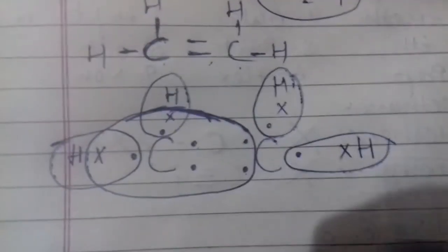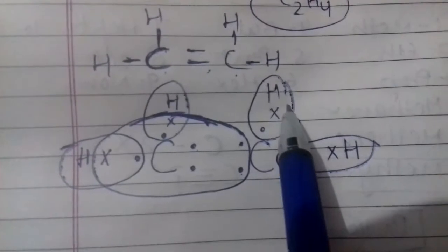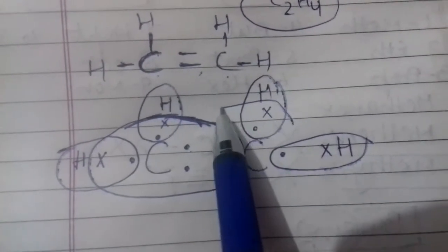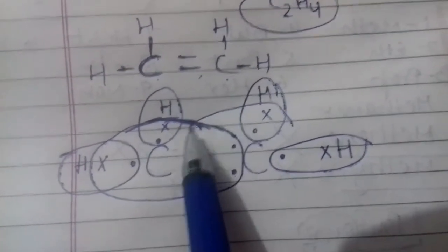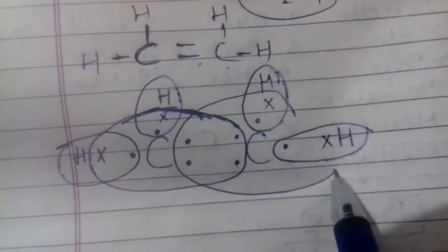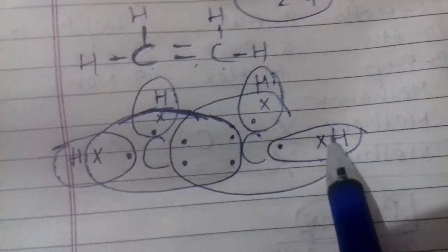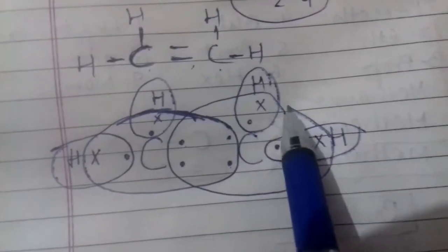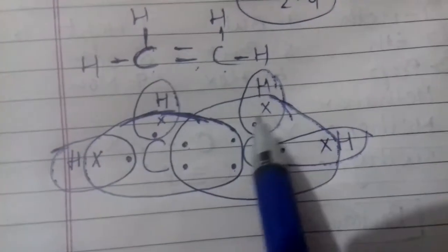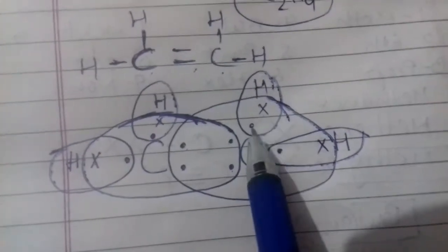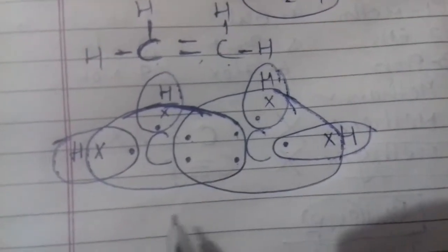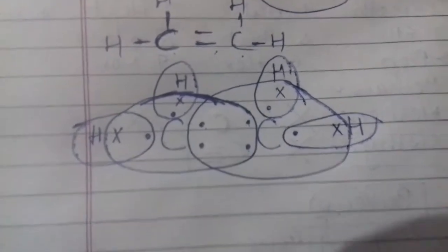8 electron हो गए और इसका octet complete हो गया। इसी तरीके से ये वाला carbon है - इसकी valency भी complete हो जाएगी। ऊपर hydrogen से bond बना रहा है, सामने carbon से बना रहा है, और आगे भी hydrogen से एक bond बना रहा है। तो इसके circle में भी 8 electron हो गए।